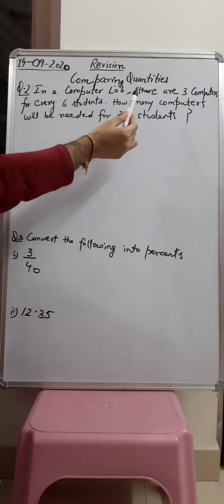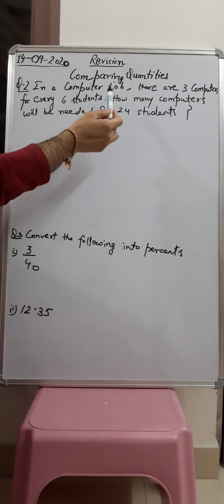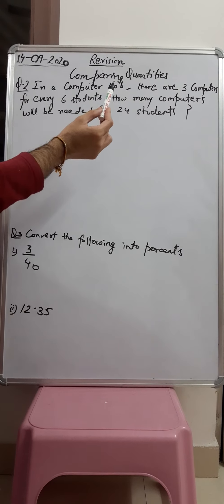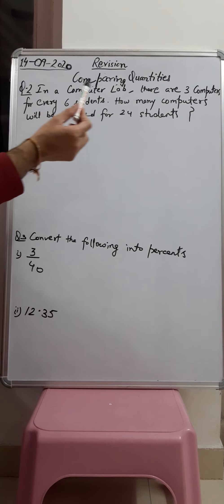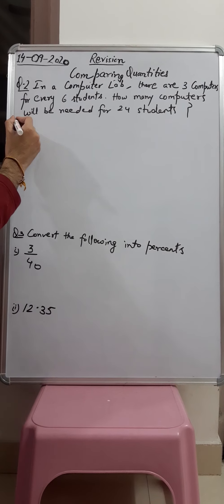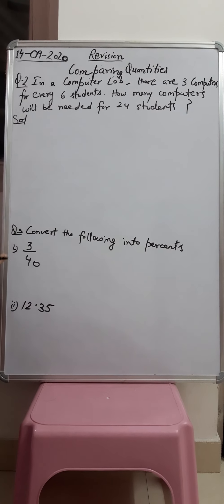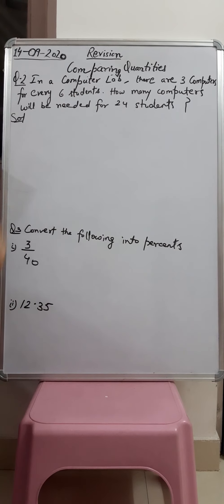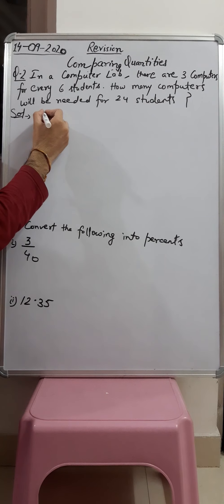Question number two: in a computer lab there are three computers for every six students. That means for six students there are three computers. How many computers will be needed for 24 students? We are going to use the unity method. We have been given that for six students we need three computers.